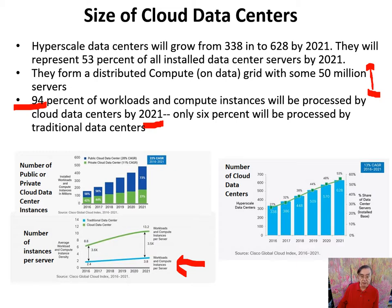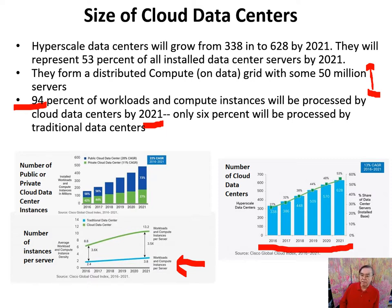The number of data centers is increasing 13% per year, and instances are going up 22% per year, meaning we're getting more and more servers in each data center. Dividing 50 million servers by around 500 data centers, there's probably an average of 100,000 servers in each of these hyper-scale data centers. These data centers are many football fields in area, and are placed based on the combination of tax breaks, incentives, and quality workforce.